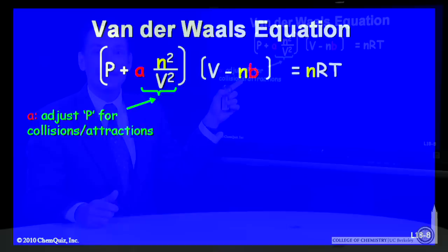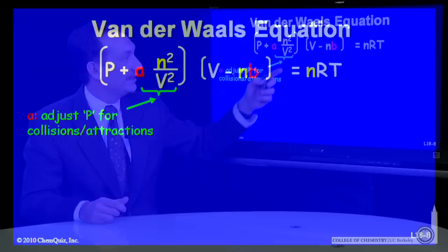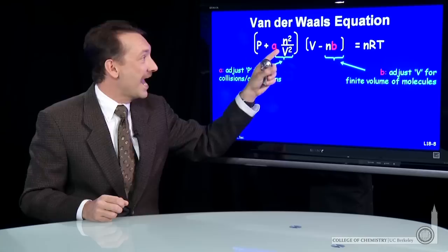The modification to the P term accounts for the interaction energy, the attractive forces of the particles. The modification to the V term accounts for the finite volume of the particles. So we have an A and a B parameter to account for real behavior in gases.